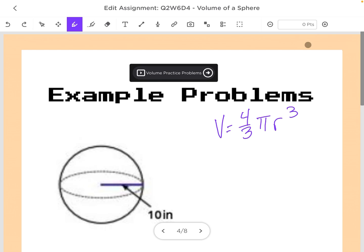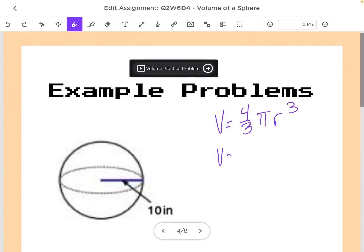So now I'm going to take this and plug in my radius. So I've got volume equals four-thirds pi. The radius here is 10, and then I do cubed. Okay, so now that I have that,